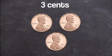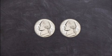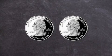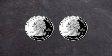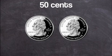If you got three cents, you're correct. Now if you have two nickels, what's your final value? Since one nickel is five cents and you have two nickels, you'd get ten cents. And if you have two quarters, what is your final value? If you got 50 cents, you're correct, because one quarter is 25 cents and two quarters together equal 50 cents.